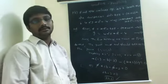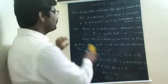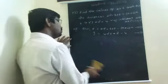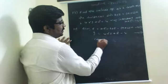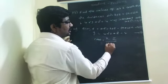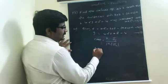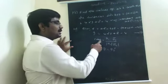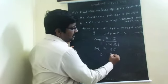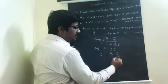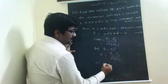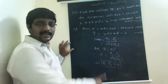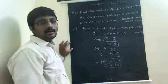Now, to get the other constant value, we have a formula — the cos theta formula. cos theta equals N1 bar dot N2 bar upon modulus of N1 bar times modulus of N2 bar. Since the surfaces intersect orthogonally, this implies N1 bar dot N2 bar equals 0.